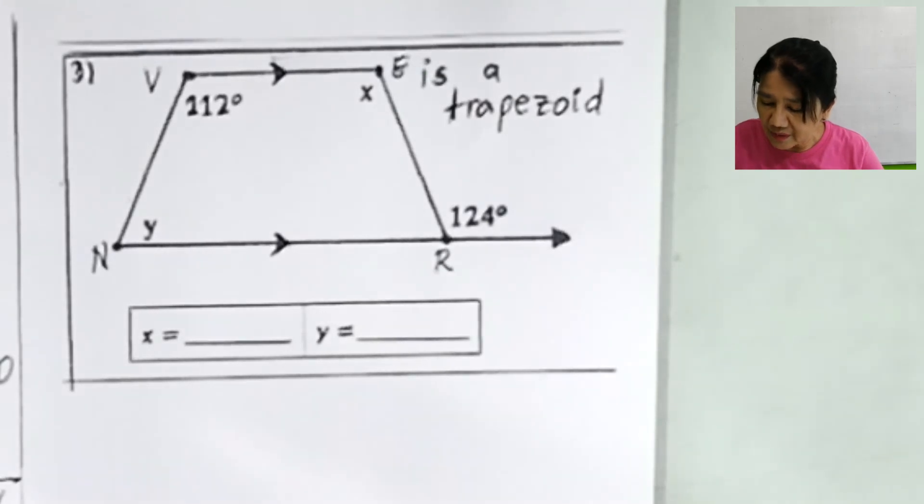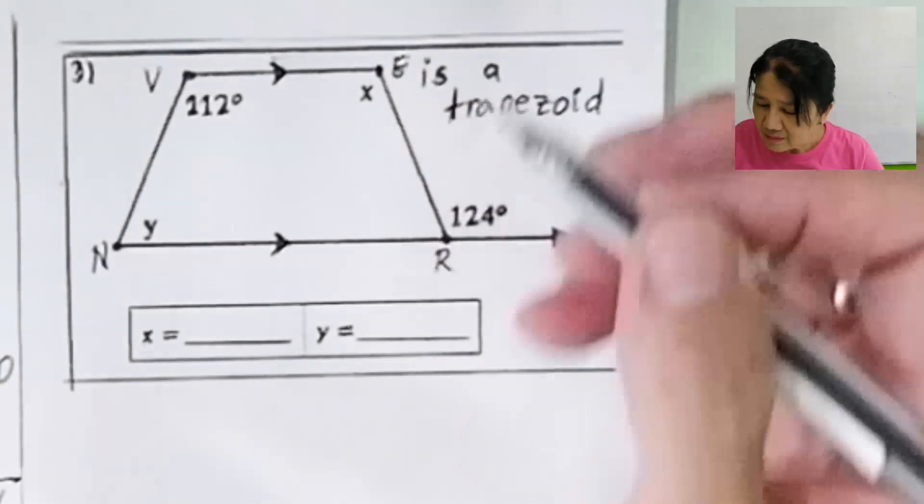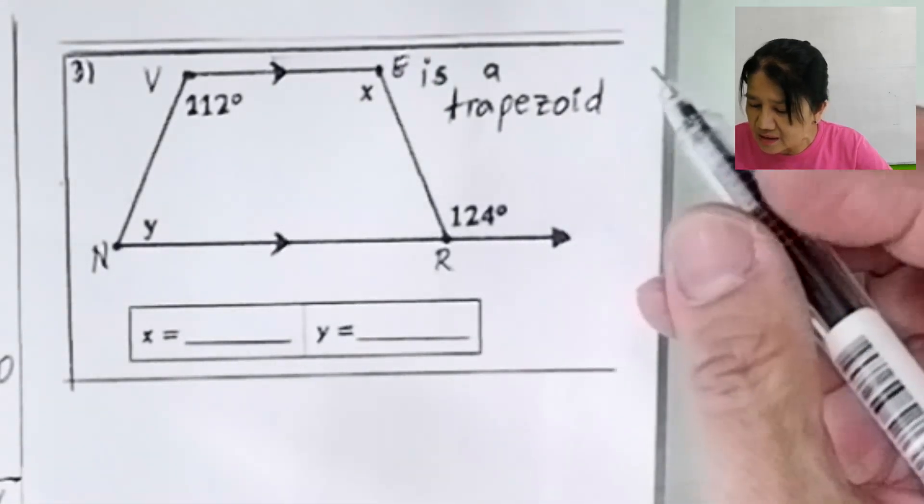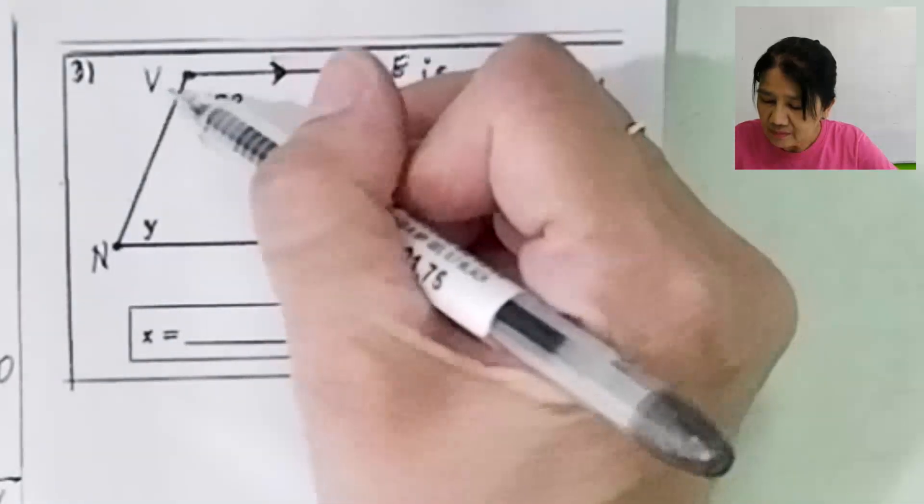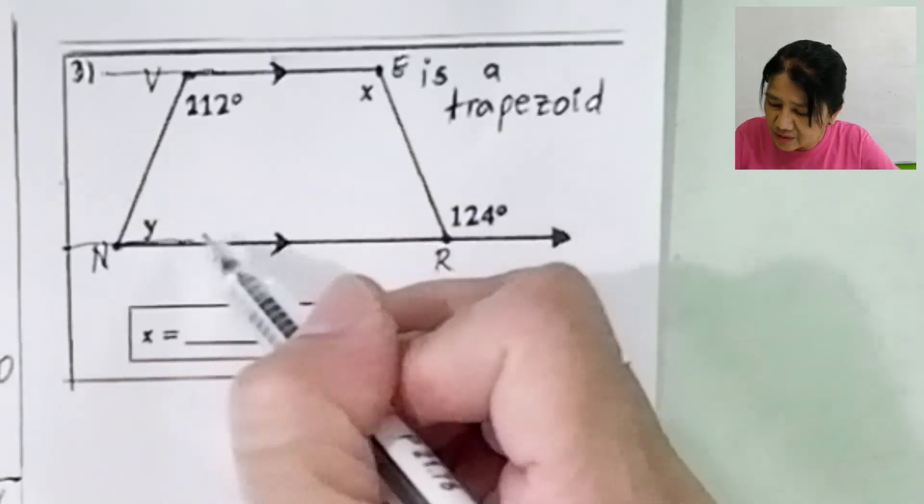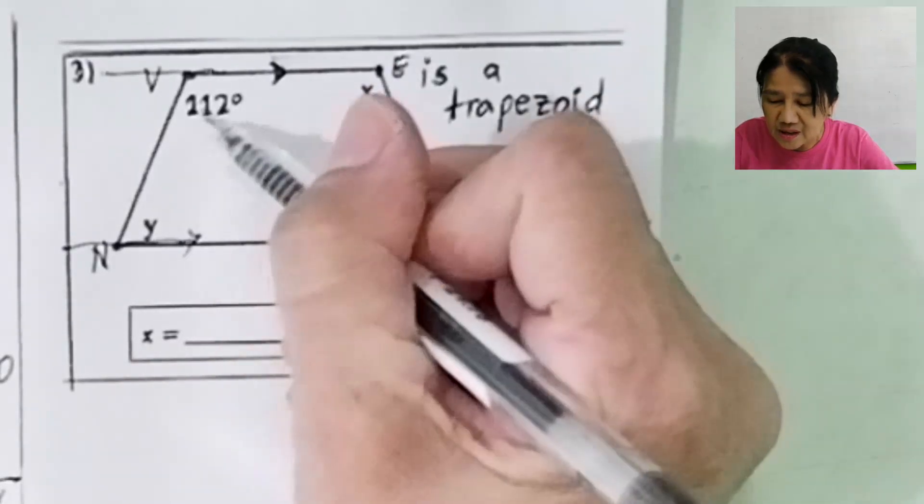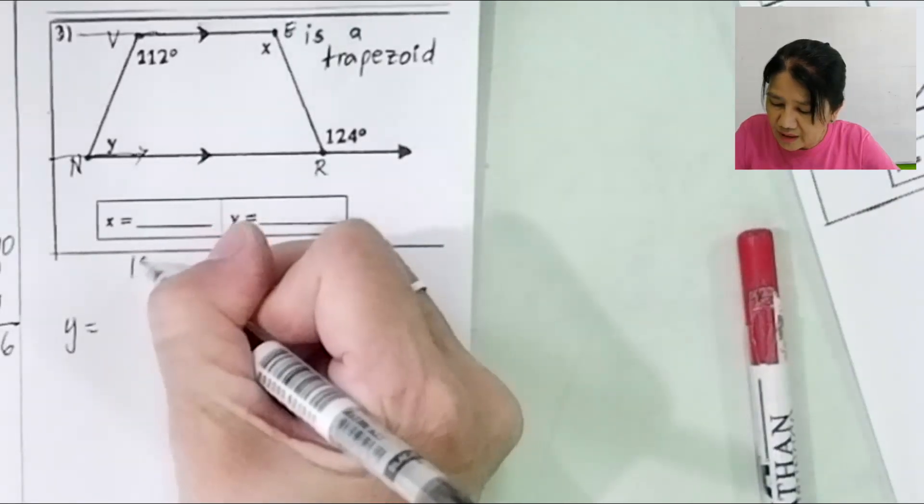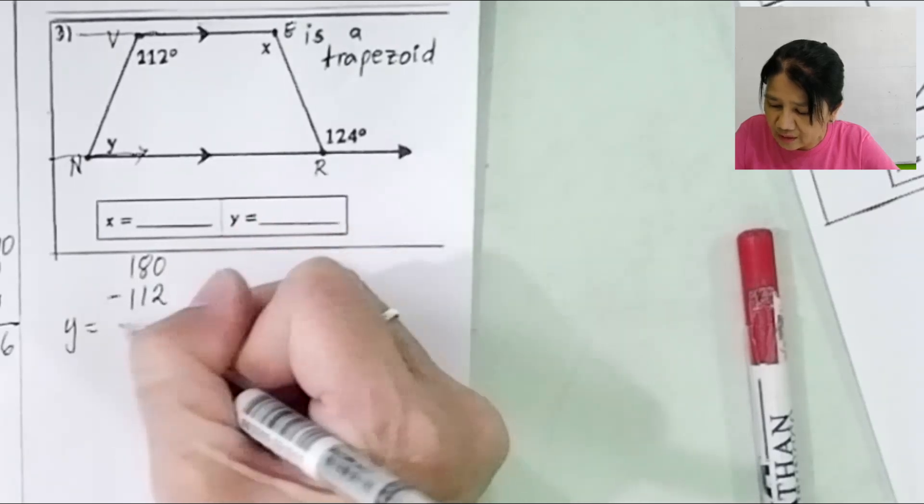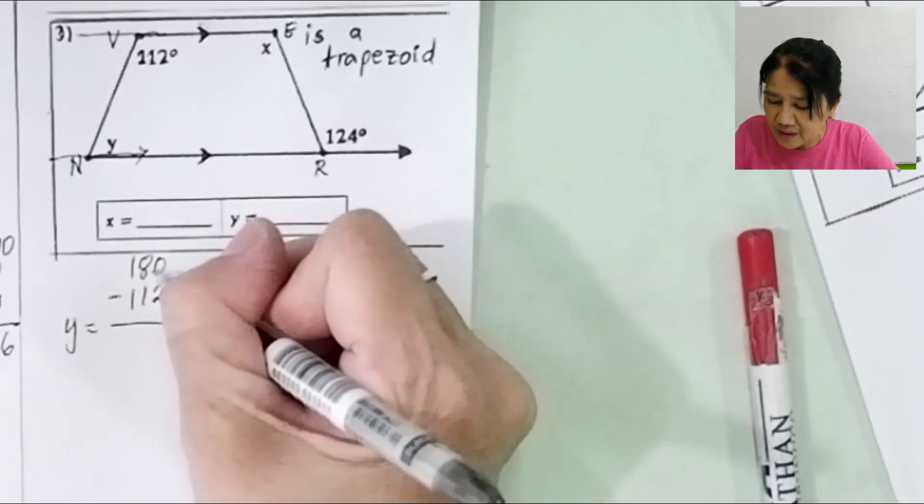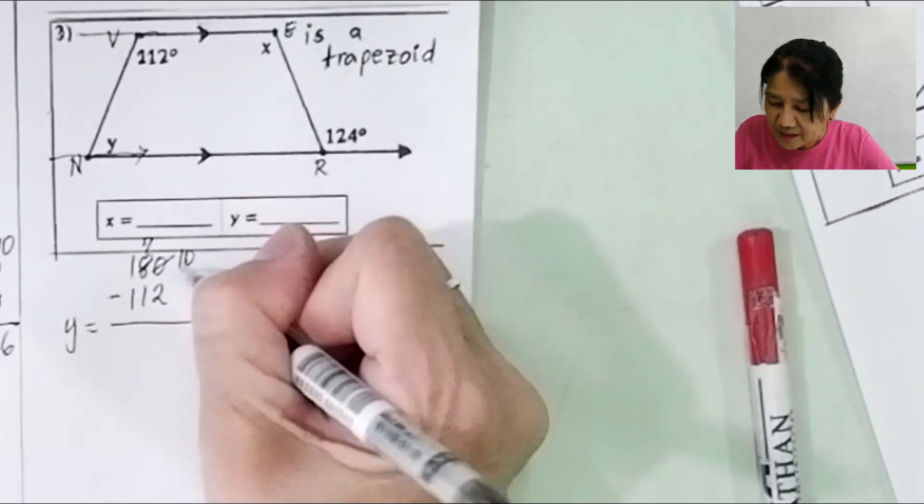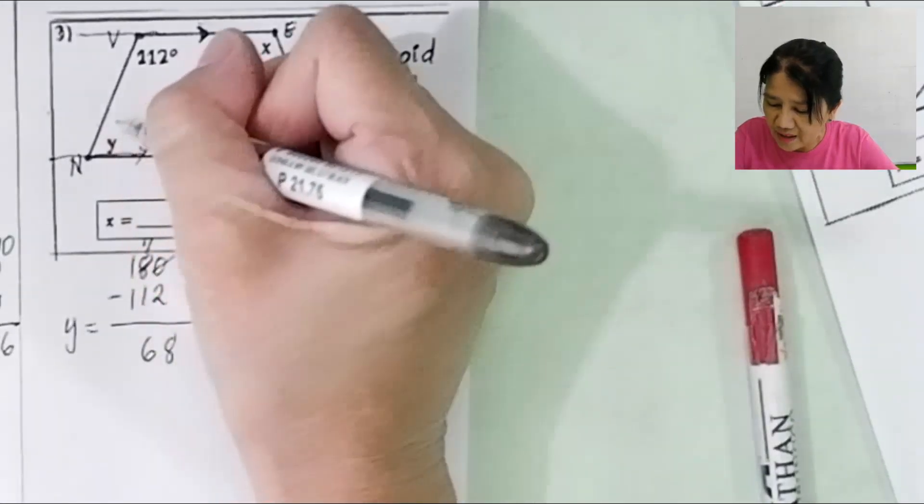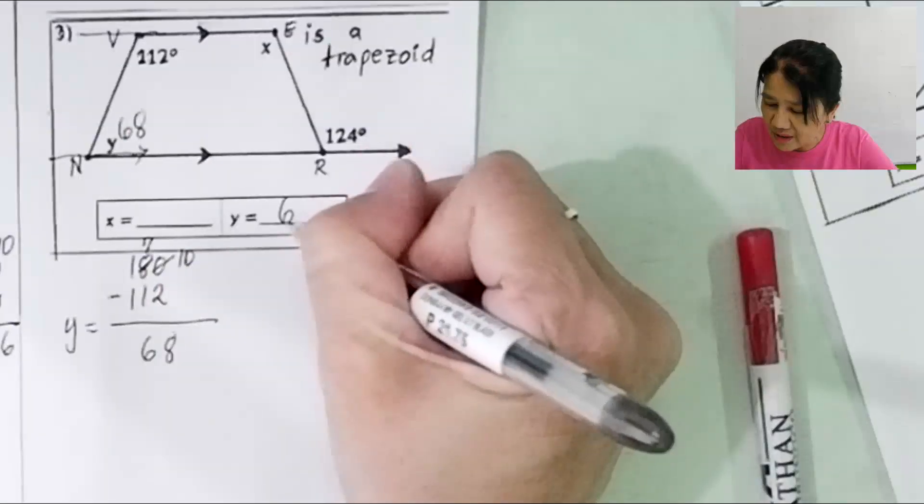Let's move on to problem number 3. Quadrilateral VERNE is a trapezoid. So this side is parallel to this side. Interior angles on the same side are supplementary. Therefore, y will be 180 minus 112. 10 minus 2 is 8, 7 minus 1 is 6. That is y. So y is 68.